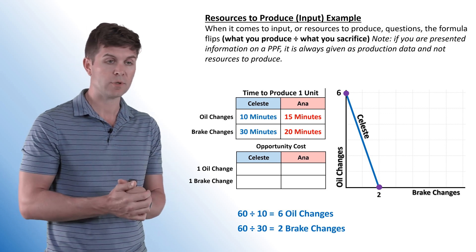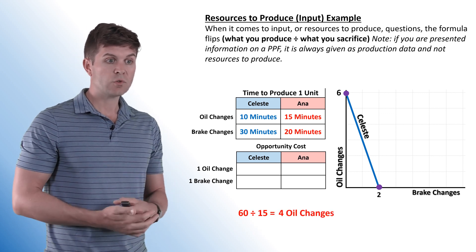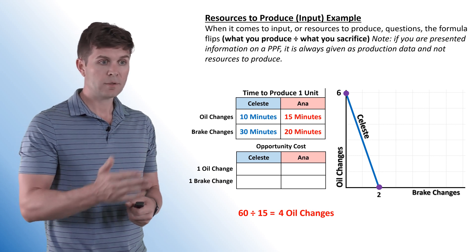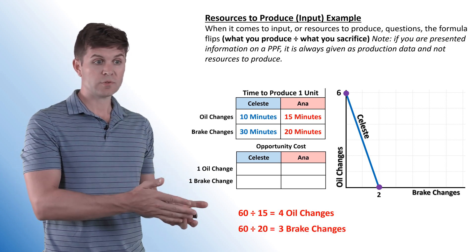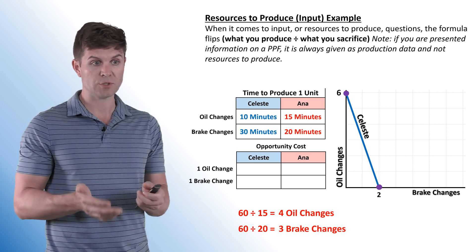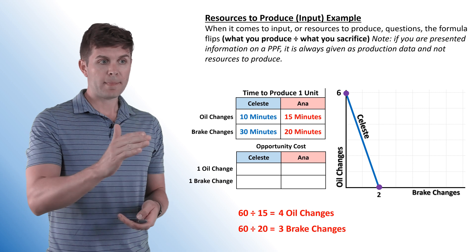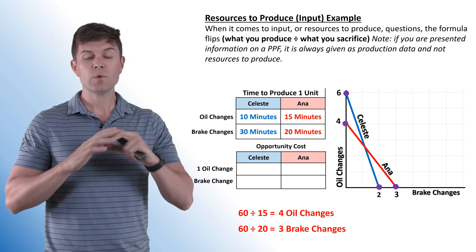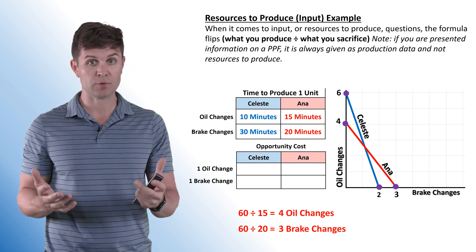For Anna: 60 divided by 15 gives four oil changes per hour, and 60 divided by 20 gives three brake changes per hour. We can throw this one up on the frontier as well. Now we've got both plotted.